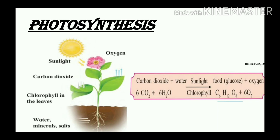Photosynthesis means putting together or preparing. To make their food, plants require light, water, carbon dioxide, and also nutrients from soil. Plants get light from sunlight, water from the ground, and carbon dioxide from the air. In the chemical reaction, carbon dioxide and water in the presence of sunlight and chlorophyll produce food — in the form of glucose — and oxygen is released into the atmosphere. Plants convert light energy into chemical energy and store it as food.